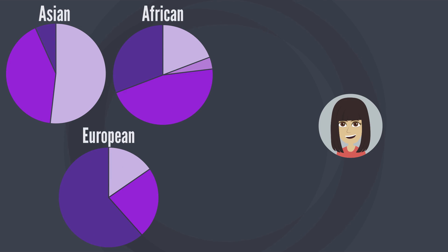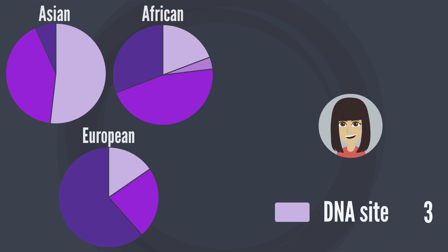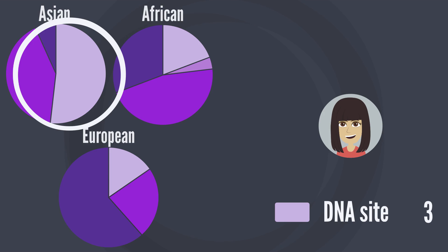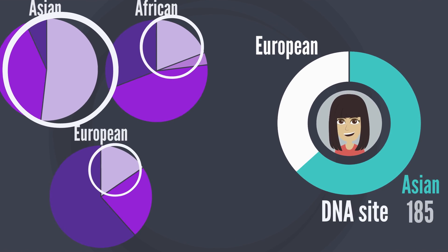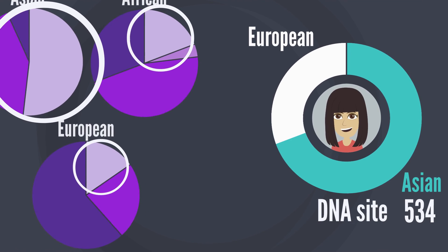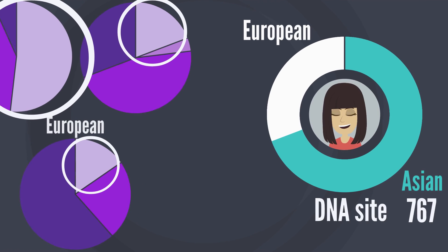So let's look at a third DNA site. At this site, Daisy carries the light purple variant, which is present in all the reference populations. This variant is common in people with Asian ancestry, so it is more likely that Daisy shares ancestry with this group. But since the light purple variant is found in the African and European reference populations as well, it is also possible that she has ancestry in common with them. So it is difficult to estimate Daisy's ancestry based on just a few DNA sites. Because of this, the ancestry testing company looks at hundreds of thousands of DNA sites to get a more reliable estimate.